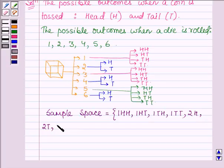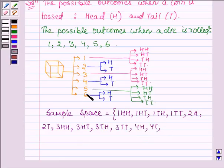With 3, we have 3HH, 3HT, 3TH, and 3TT. With 4, we have 4H and 4T.